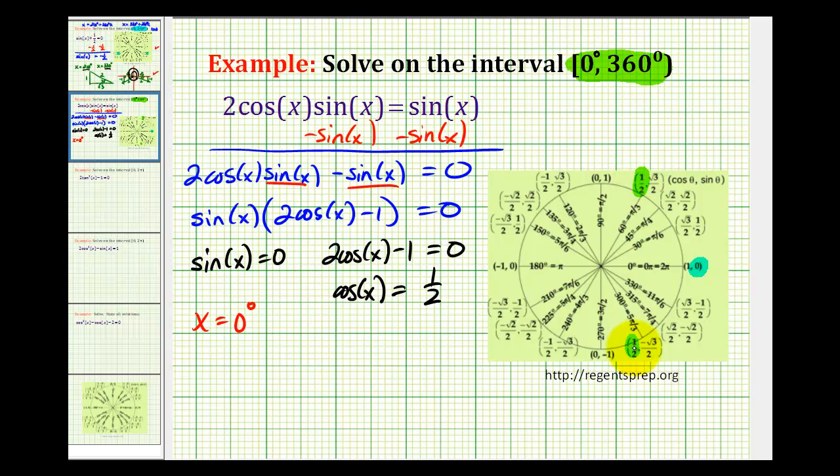and x is also equal to one-half here where theta would be 300 degrees or five pi over three radians. So we have x equals 60 degrees and 300 degrees.